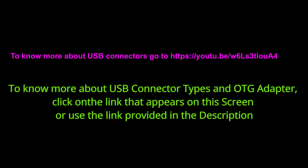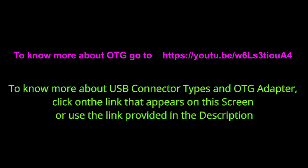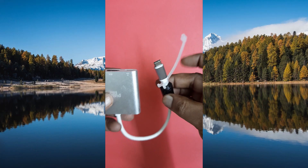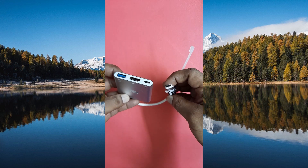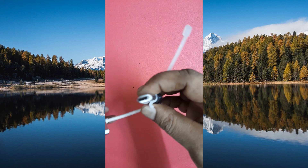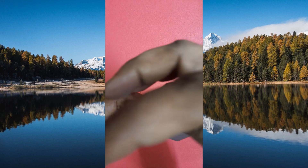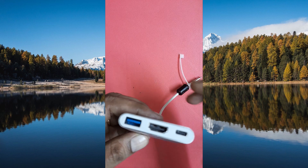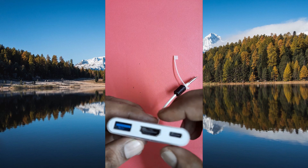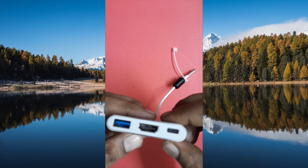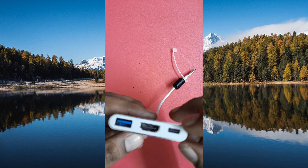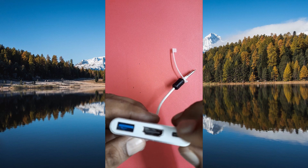The cable will also have USB connectors at both ends. If you want to understand the theory of USB OTG and its connections, use the link given in the description or click on the link that appears here. You can also use a USB OTG hub to connect a mouse or other devices to your mobile phone. The host end of the hub connects to the master mobile phone, and the standard Type-A USB connectors at the other end help to connect a mouse.